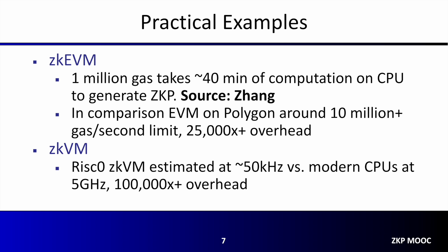Similarly, ZK VMs like RISC-0's RISC-V based ZK VM is estimated to run at approximately 50 kHz. In comparison to a modern-day CPU which can run at 5 gigahertz or more, this implies an overhead of 100,000 or more. These examples are not meant to suggest a performance issue with either of these projects, but merely to show the overhead that comes with proof generation.